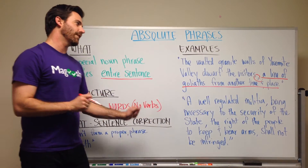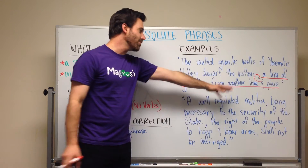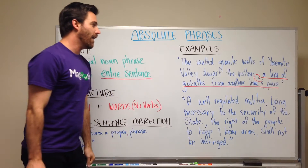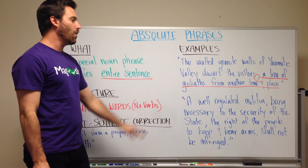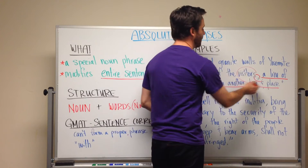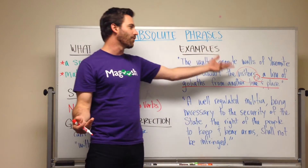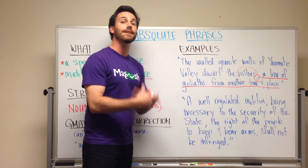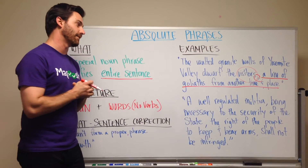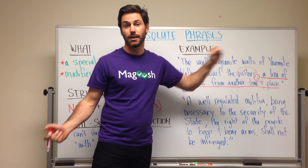You'll notice here that it starts with a noun — 'a line' — and then we have words that aren't verbs. And hopefully what you notice is that this phrase is not describing 'visitors' here. It's talking about these vaulted granite walls of Yosemite. So it's giving detail and adding description to the sentence as a whole, instead of telling us about a specific word in the sentence.